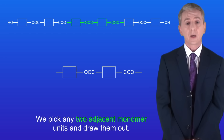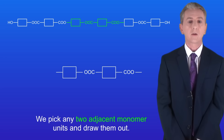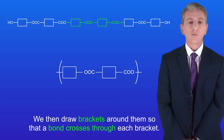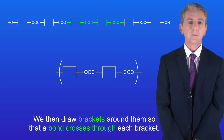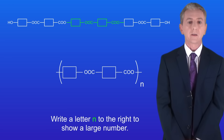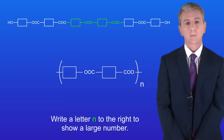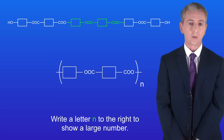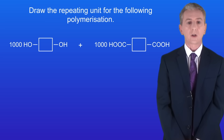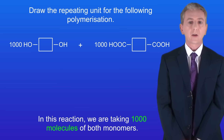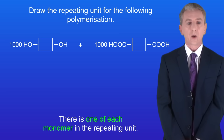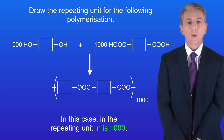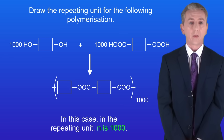To find the repeating unit, we pick any two adjacent monomer units and draw them out. We then draw brackets around them so that a bond crosses through each bracket, and finally we write a letter n to the right to show a large number. In the exam you could be shown a specific number of monomers and asked to draw the repeating unit. For example, if we take 1000 molecules of both monomers, there is one of each monomer in the repeating unit, so in this case n is 1000.